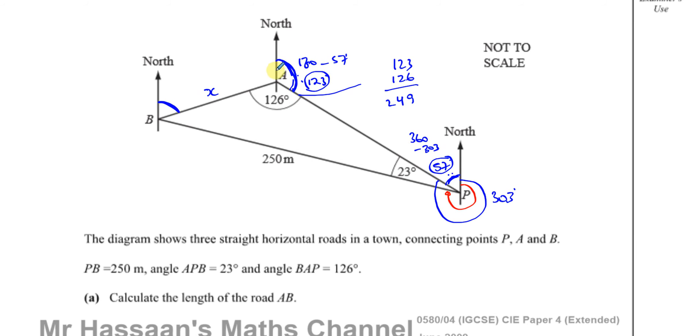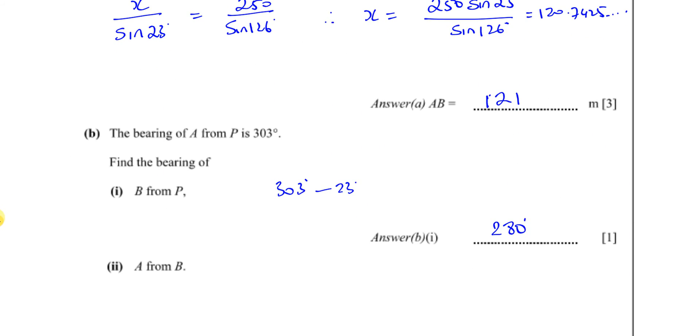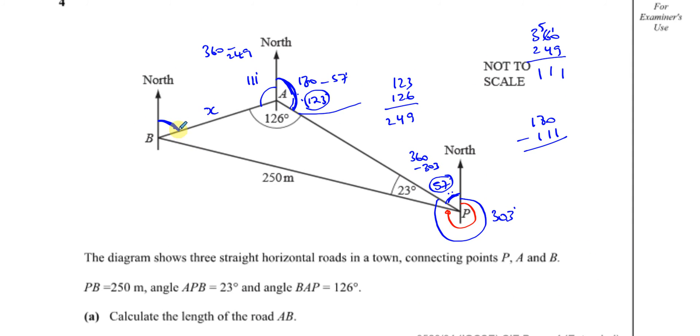360 minus 249 gives 111. This is 111 degrees. The angle we're looking for is 180 minus 111 - that's the bearing of A from B. 180 minus 111 gives us 69 degrees.